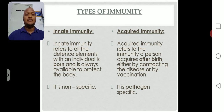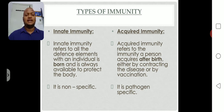The immunity which is present at the time of birth is called innate immunity. Innate immunity is non-specific. Non-specific means there is no antigen-specific response — any type of foreign body or antigen that enters the human body, innate immunity is going to respond.